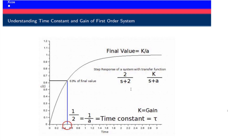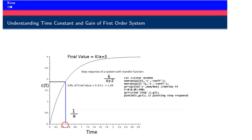I'm not going into detail on system identification, but that's why this curve is so important. Now let's take an example where K differs from A. Consider the transfer function 6/(S+2). Here K is 6 and A is 2, so the final value K/A equals 3.